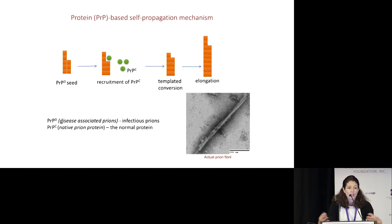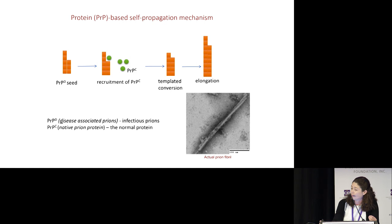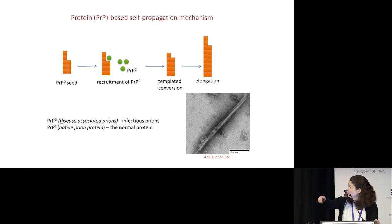This process takes place again and again so that you have elongation of those highly organized misfolded assemblies. What you're looking at on the bottom is a super high magnification picture of an actual prion fibril. Just for context on scale, the length of the bar on the bottom is 1,000th the width of a human hair.